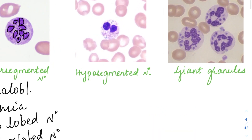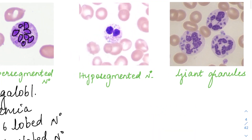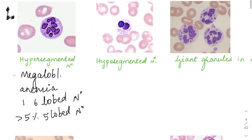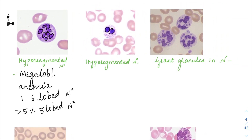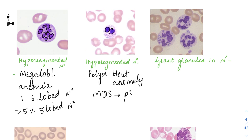The second image shows a hyposegmented neutrophil — in this image, the neutrophil has only two lobes. This is called a hyposegmented neutrophil, seen in the genetic condition Pelger-Huet anomaly. These kinds of cells are also seen in myelodysplastic syndrome, wherein they are called pseudo-Pelger-Huet anomaly. So hypersegmented neutrophils are seen in Pelger-Huet and pseudo-Pelger-Huet anomalies.